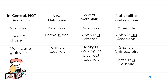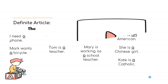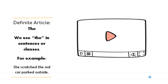When talking about nationalities and religions in singular, we use indefinite articles — for example, 'John is an American,' 'She is a Chinese girl,' and 'Kate is a Catholic.' Now, the definite article THE is the most frequent word in English. We use THE in sentences where we define or identify a particular person or object, or when something is already mentioned — for example, 'She scratched the red car parked outside,' because we know it's a specific red car.